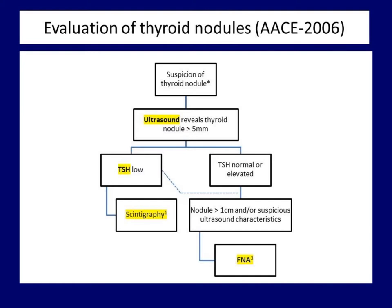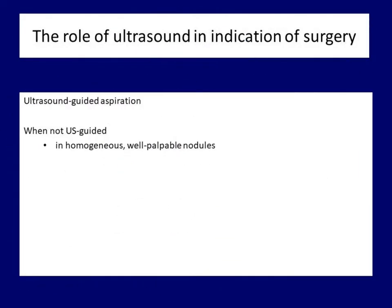Fortunately or unfortunately, this is not the case, as we will see in the upcoming section. Regardless of which procedure we follow, here comes the next role of ultrasound: the guidance of aspiration cytology. The accepted method is to perform aspiration with ultrasound guidance. The only exceptions are nodules that are homogeneous — with no part more suspicious than the others — and which are well palpable. However, ultrasound examination is mandatory even in such lesions. In either circumstance, the role of ultrasound would be finished at the indication of surgery.